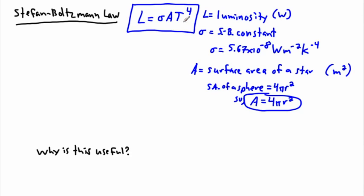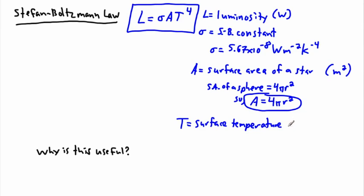We can actually use this later on to do some really neat things — to tell something about the distance away, where we'd talk about the surface area of a shell. But in this case, talking about stars, T is the surface temperature of the star, measured in Kelvin. So this tells us we can actually relate the luminosity, the surface area of a star, and its surface temperature.